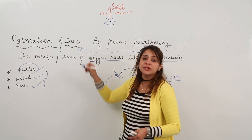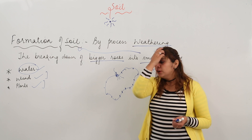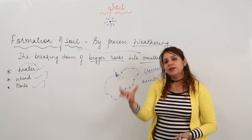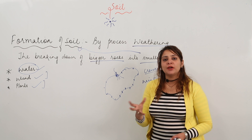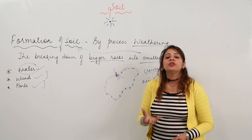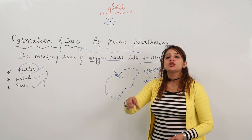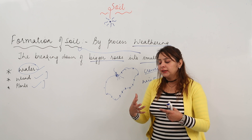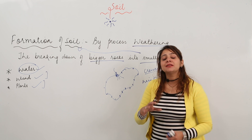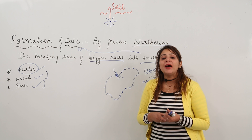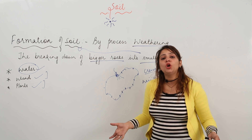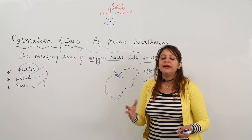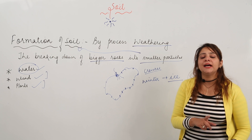So the breaking down of bigger rocks into smaller particles is called weathering, because it results in the formation of soil. For water: water enters the cracks and in winter freezes to form ice, which expands and causes weathering. For plants: roots penetrate inside, making cracks bigger, causing further weathering. It takes thousands of years to transform rock into soil, but this process is ongoing day by day, and since there are many rocks on the earth's surface, weathering is carried out simultaneously.